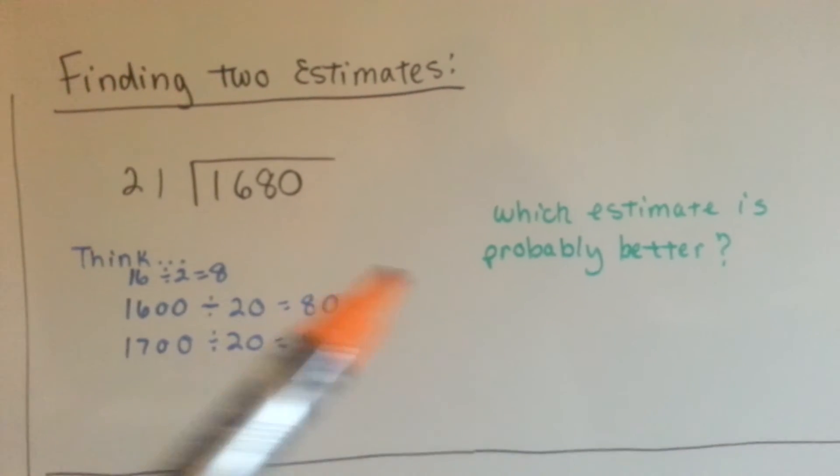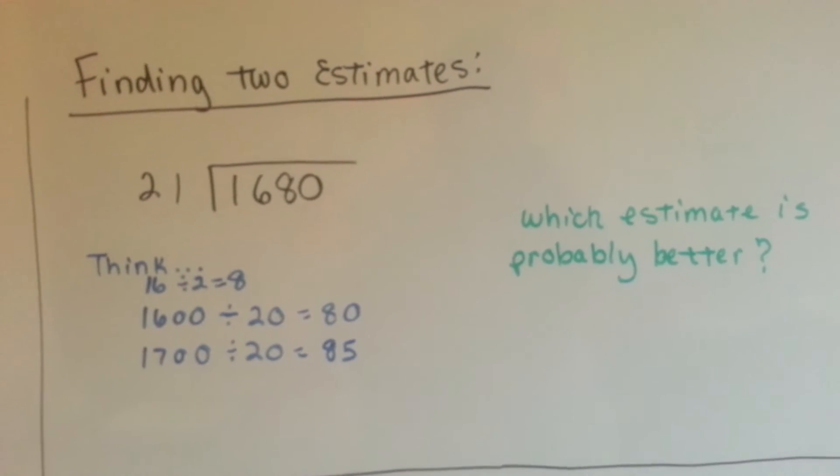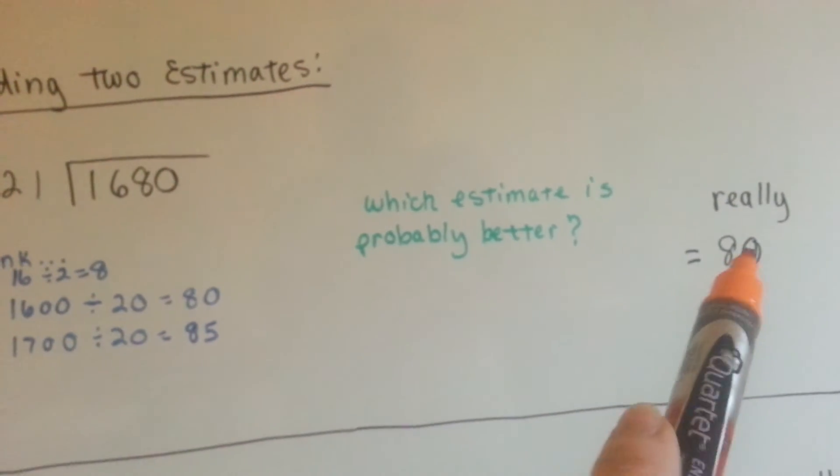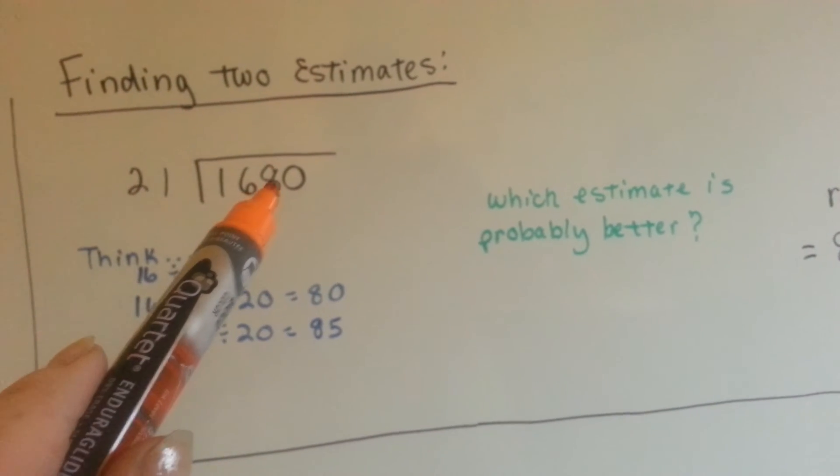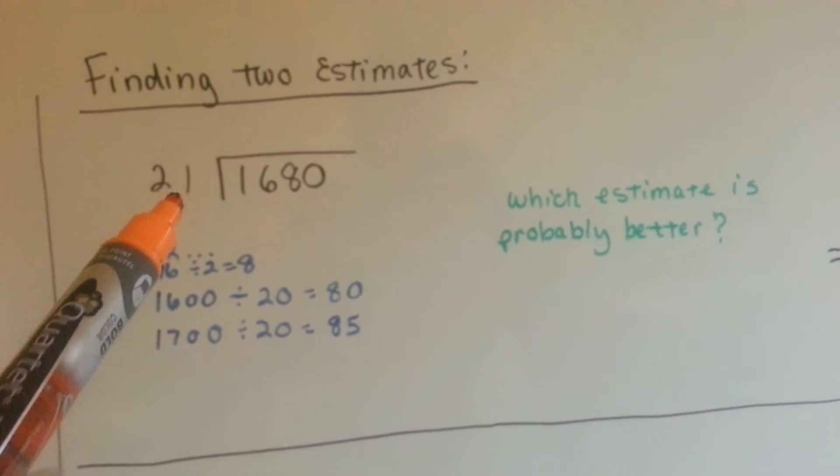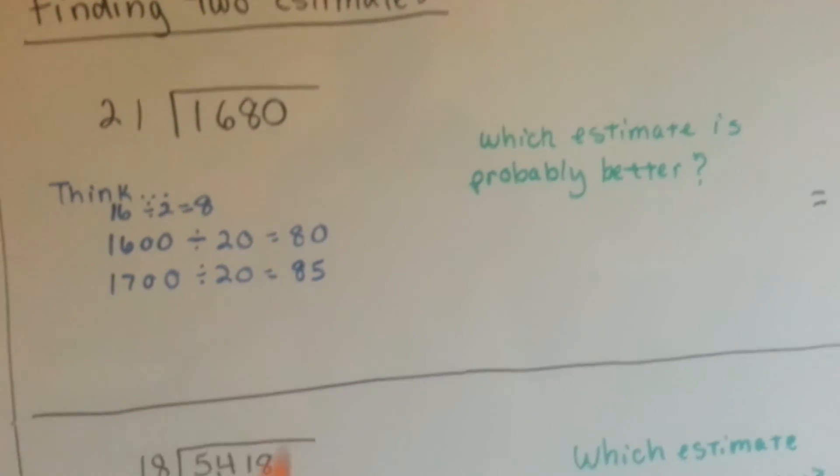So which estimate do you think would be better? Would you believe that the actual answer is really 80? Because it was a little more than 1,600 and a little more than 20, and it ended up actually being 80.